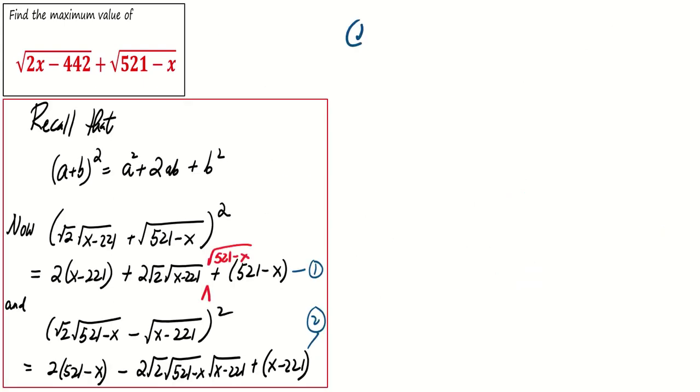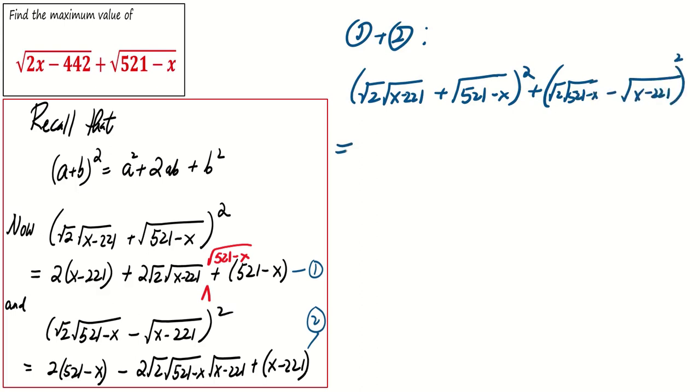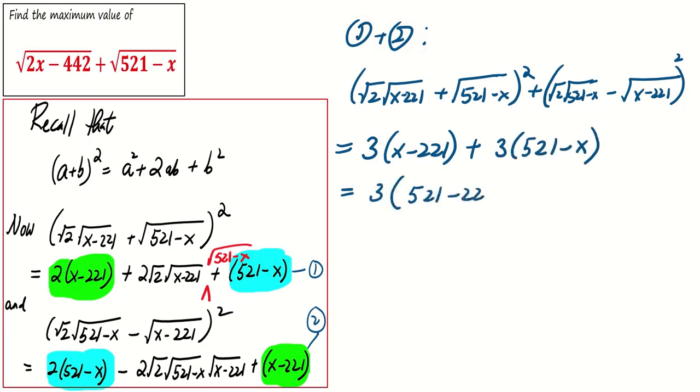By summing up these two equations, we arrive at an interesting expression. What's essential to note is that there are no additional terms in x in this sum. In fact, the sum simply equals 900.